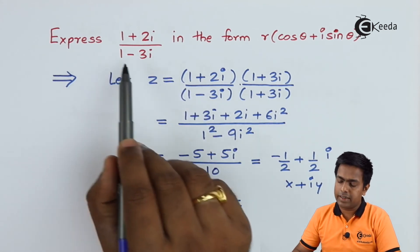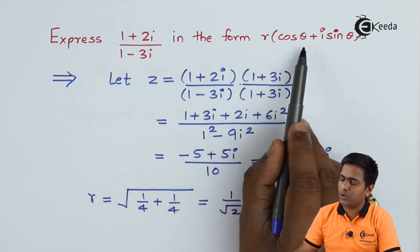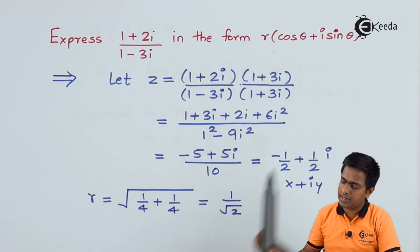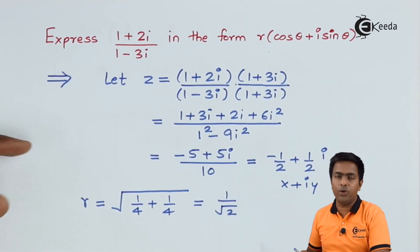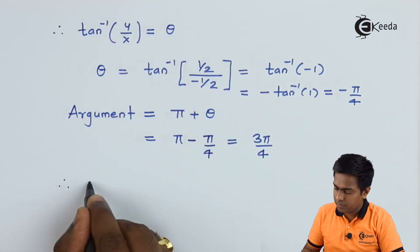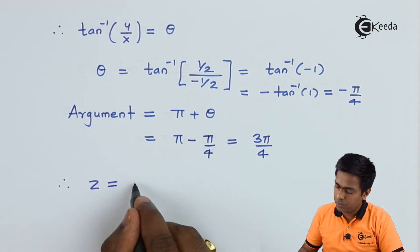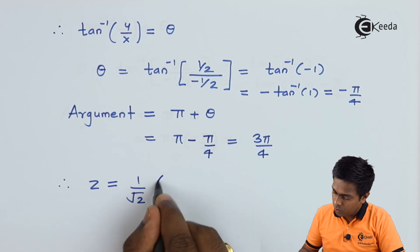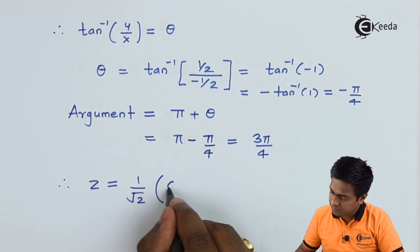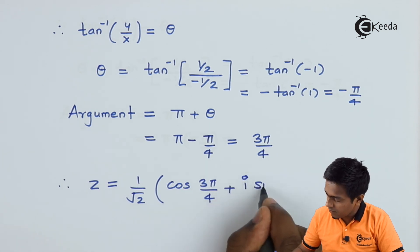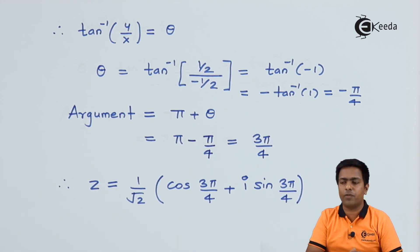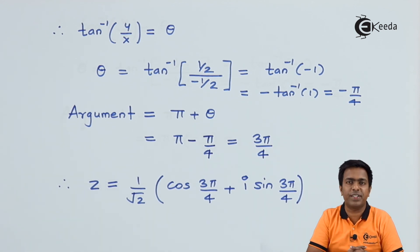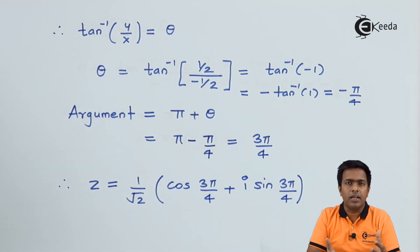We now have r = 1/√2 and θ = 3π/4. Therefore, z = (1/√2)(cos(3π/4) + i sin(3π/4)), which is the required polar form of the given complex number.